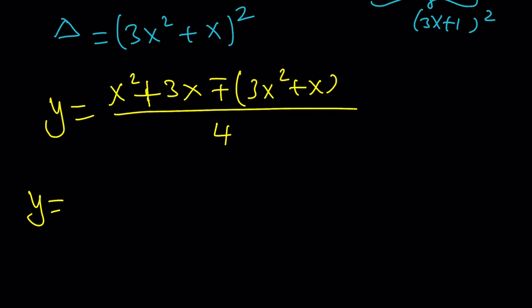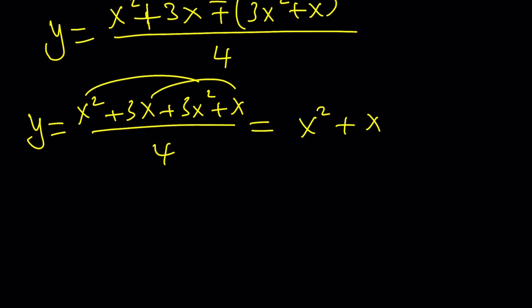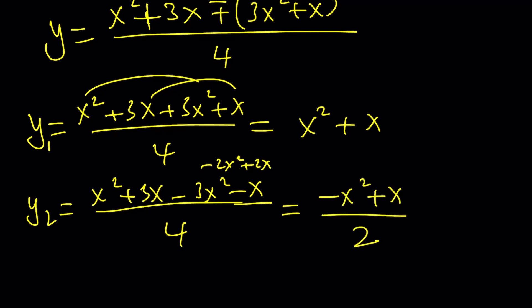So, y from here, there's going to be two solutions, by the way. One of them is going to be x squared plus 3x plus 3x squared plus x, all over 4. If you simplify this, you get 4x squared plus 4x divided by 4, which is x squared plus x. Awesome. What about the other y value? y sub 2 is just going to be x squared plus 3x minus 3x squared minus x, all over 4. And this is just going to be negative 2x squared plus 2x divided by 4.